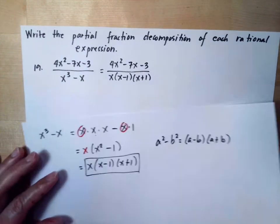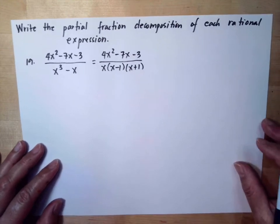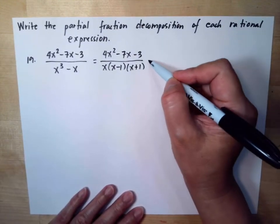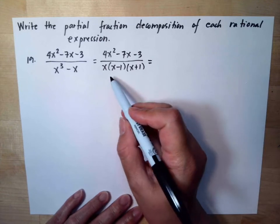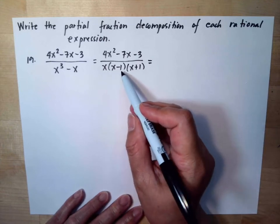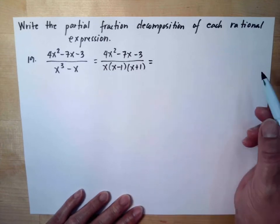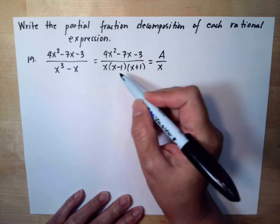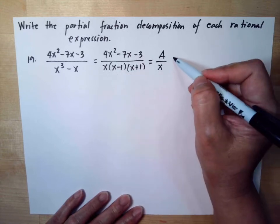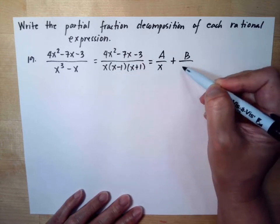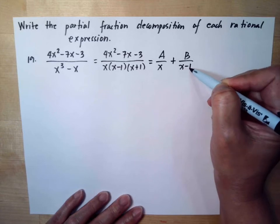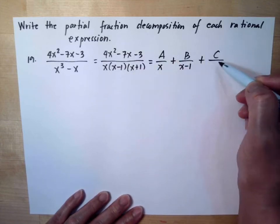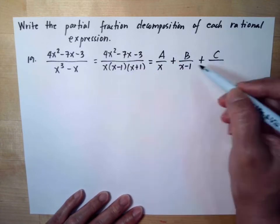Now we can start the decomposition of this rational expression. It is based on the denominator — we have 3 factors. So we set up A over x, plus B over (x minus 1), plus C over (x plus 1), corresponding to each factor of the denominator.